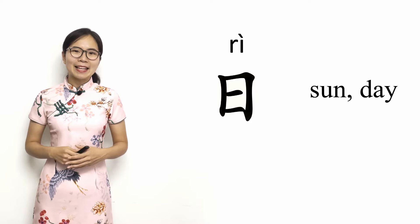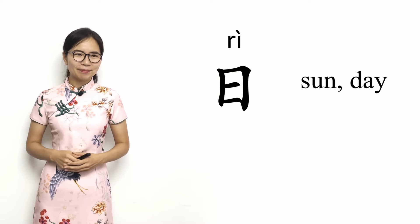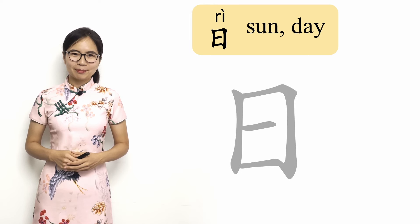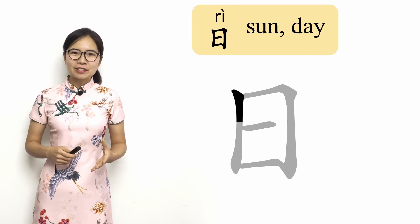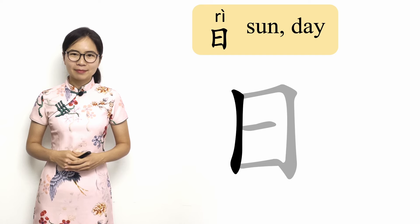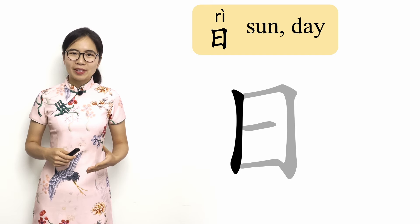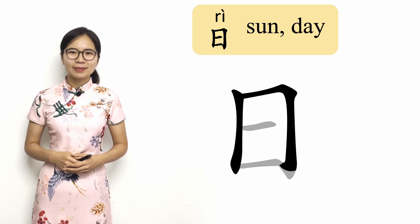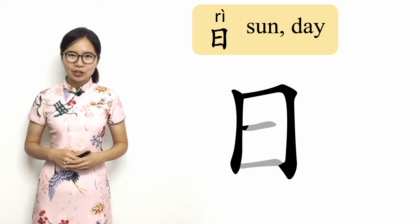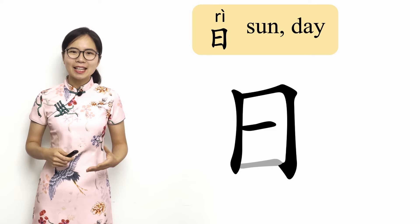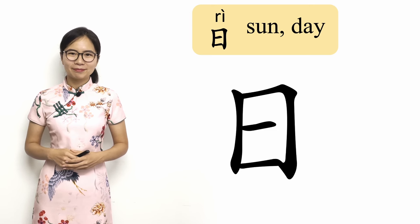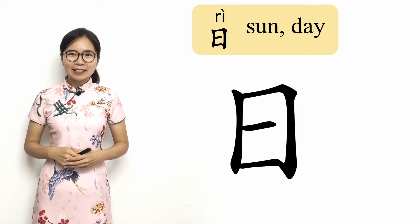Now let's take a look at how to write the character 日. 日 is written using four strokes. First is a vertical stroke on the left. Next is a stroke that first moves to the right and then down. Then a horizontal stroke. And finally, another horizontal stroke at the bottom of the character. For help with writing this character, please download the practice sheet.